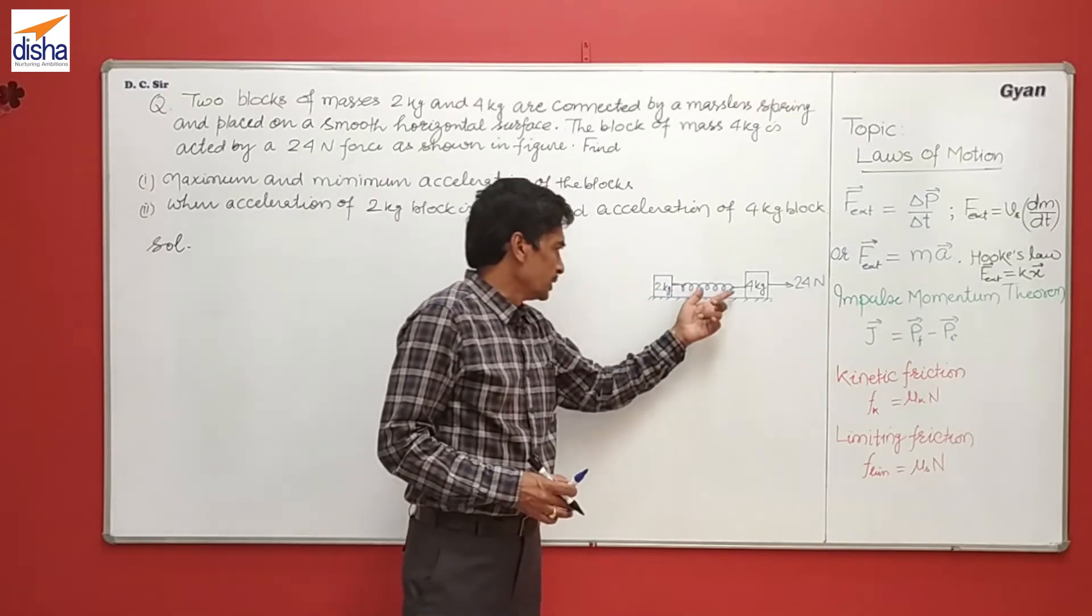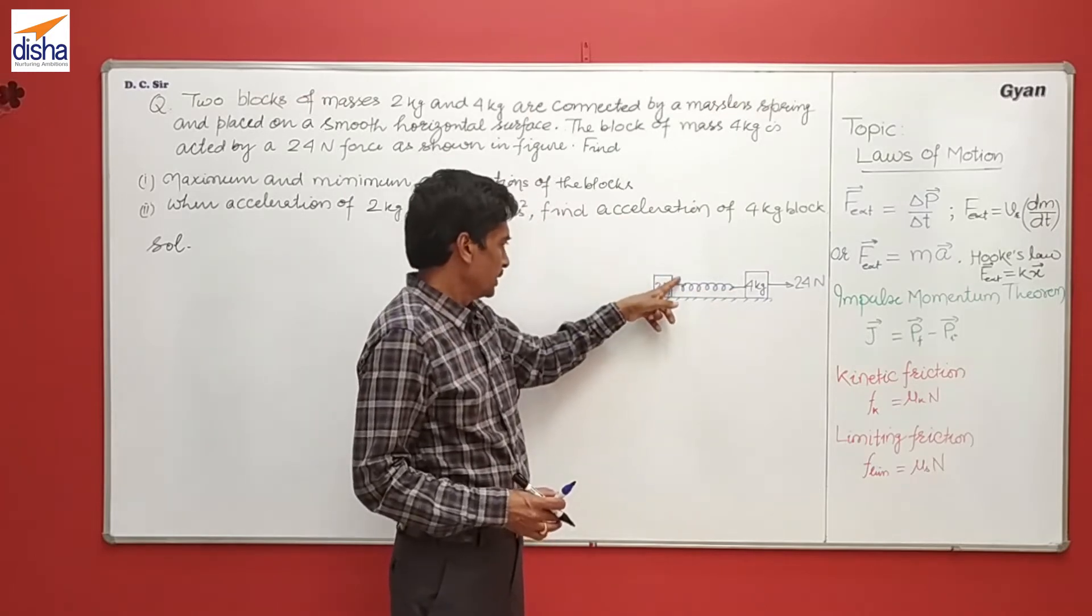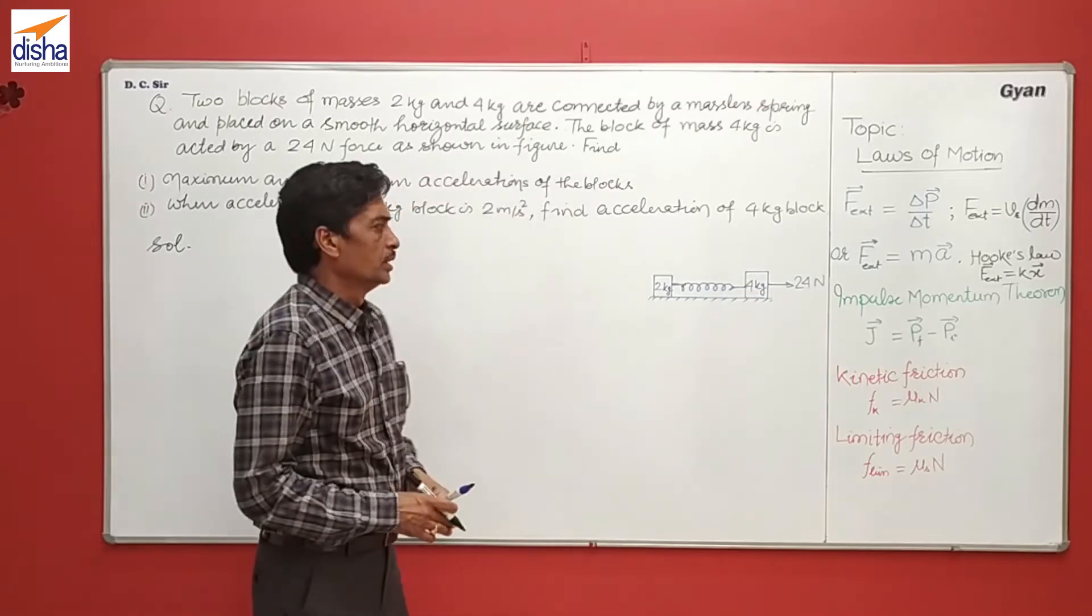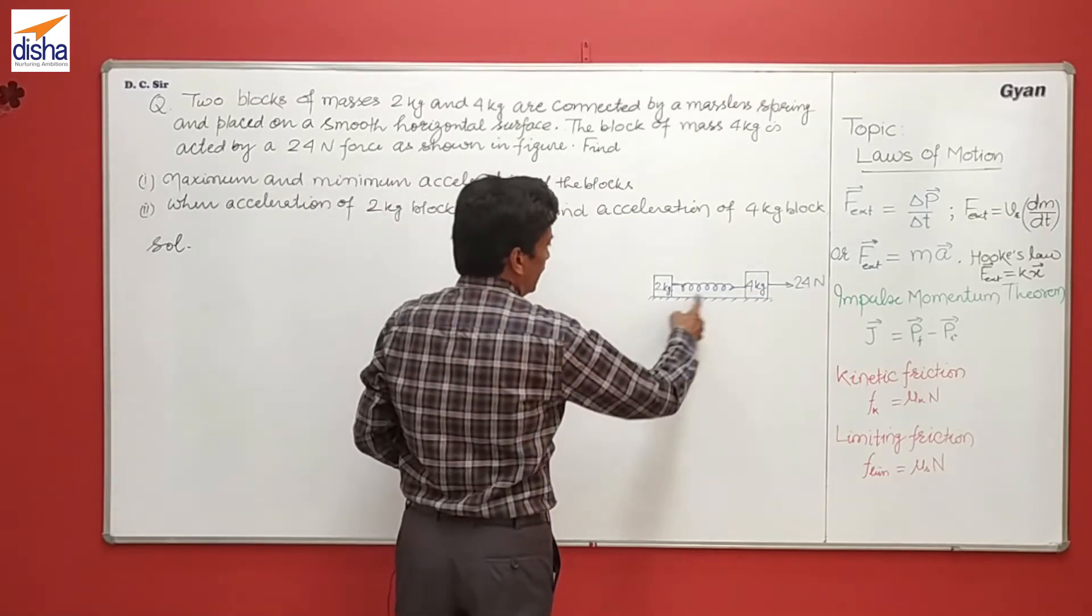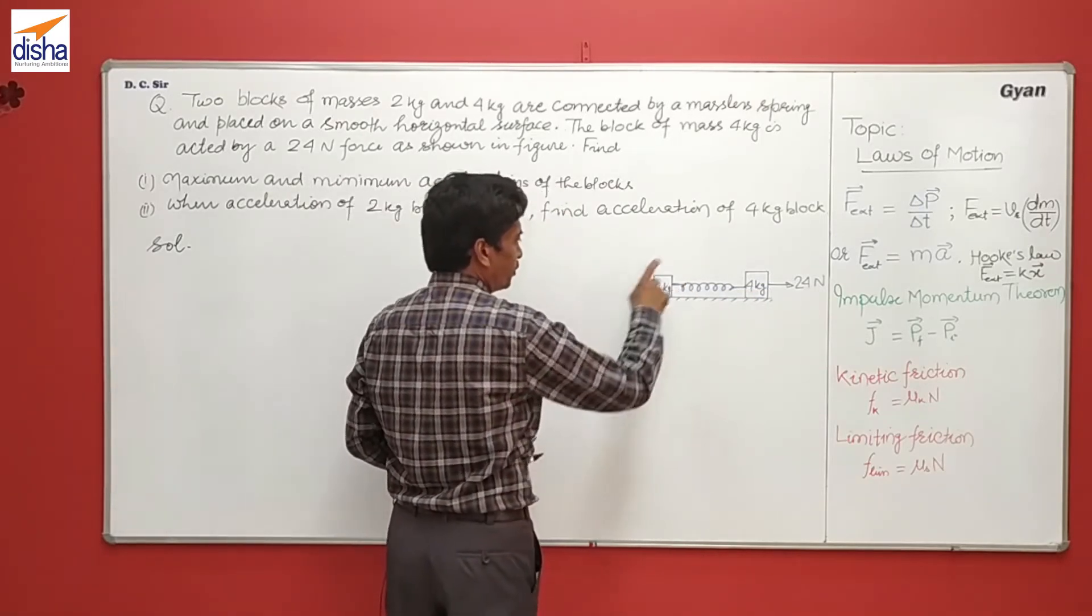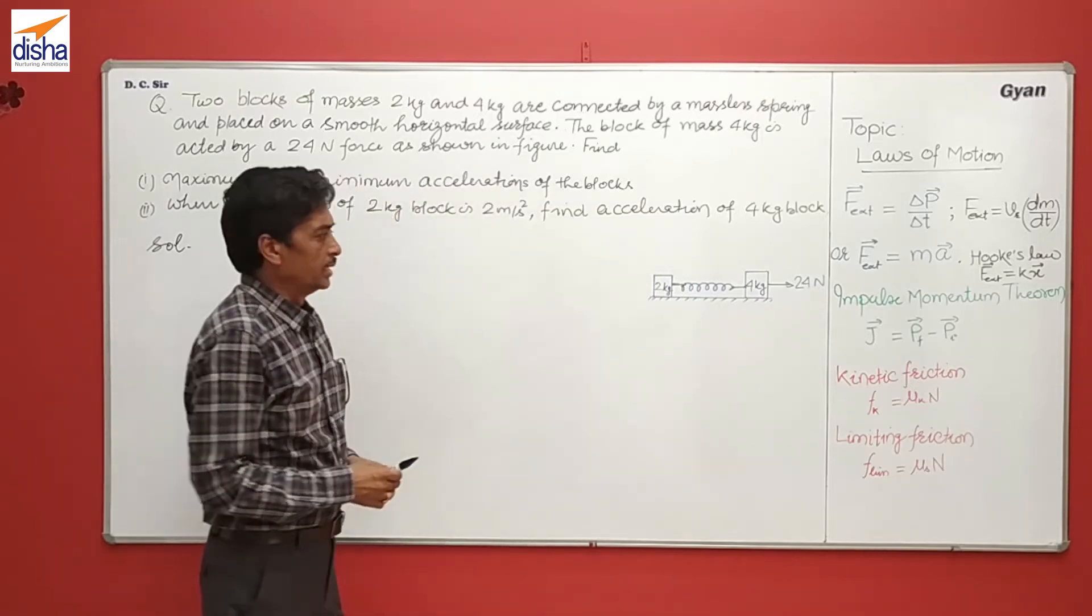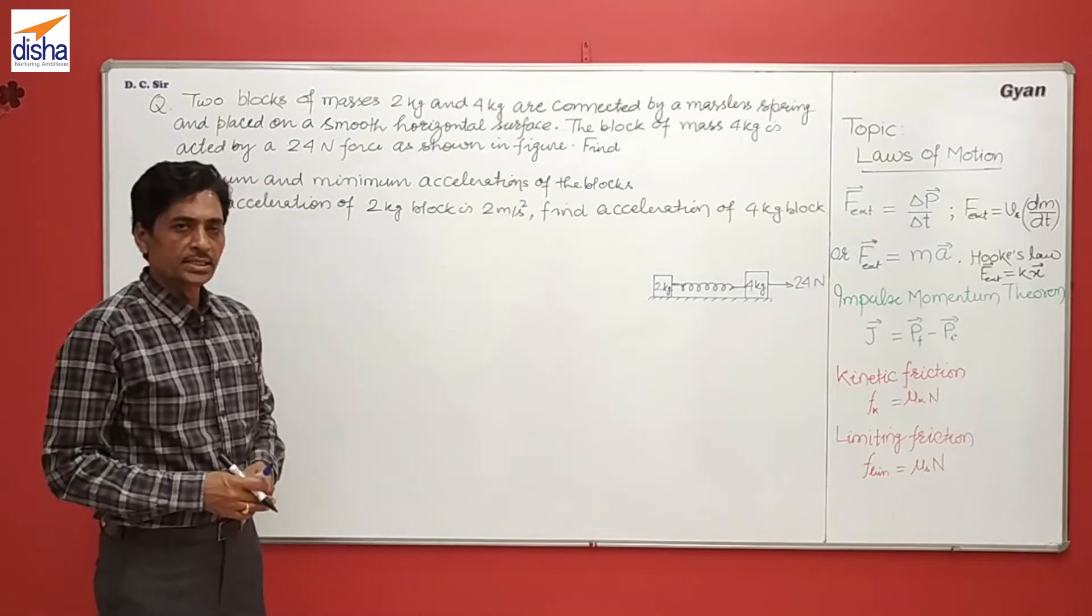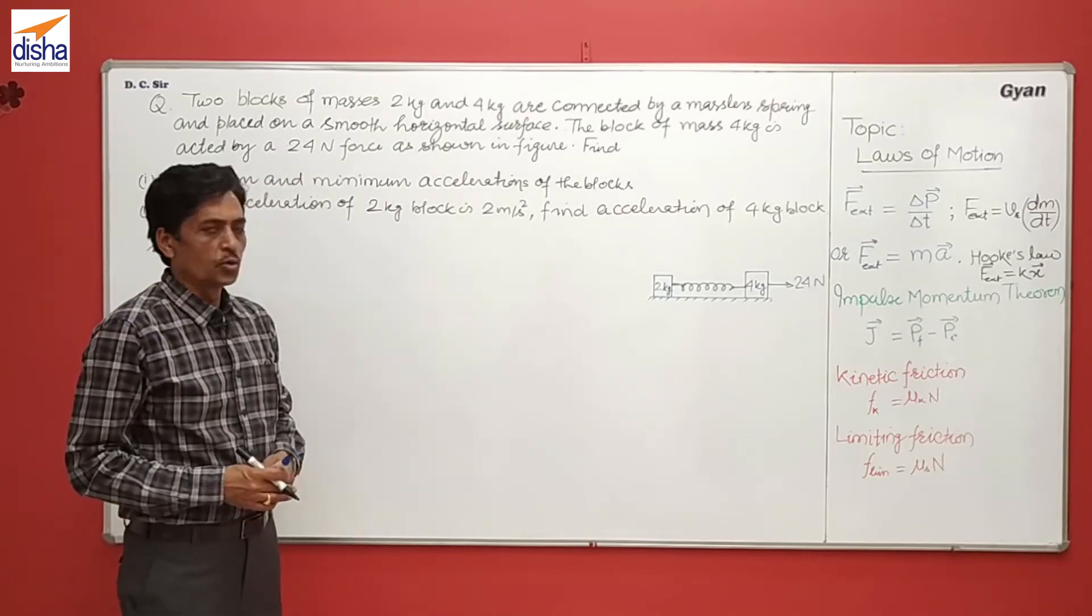So there is a force that starts acting on 2 kg in the forward direction and on 4 kg in the opposite direction. So the acceleration of 2 kg starts increasing from 0 to a certain value, and that of 4 kg starts decreasing. A condition is reached when both blocks will get the common acceleration.